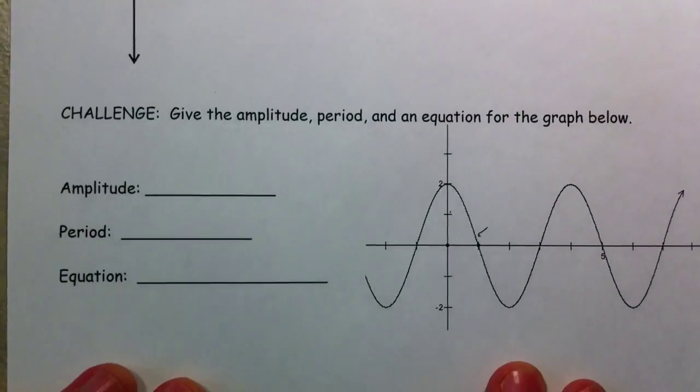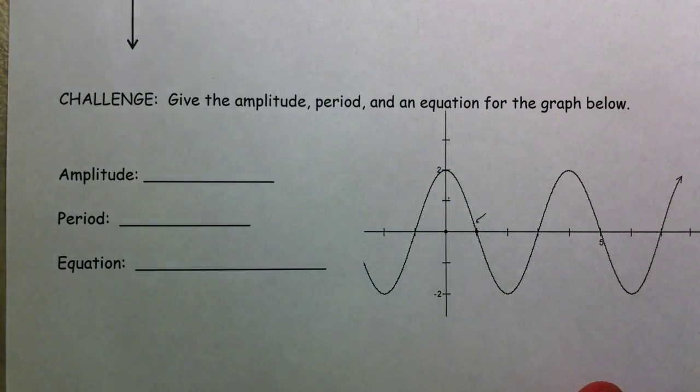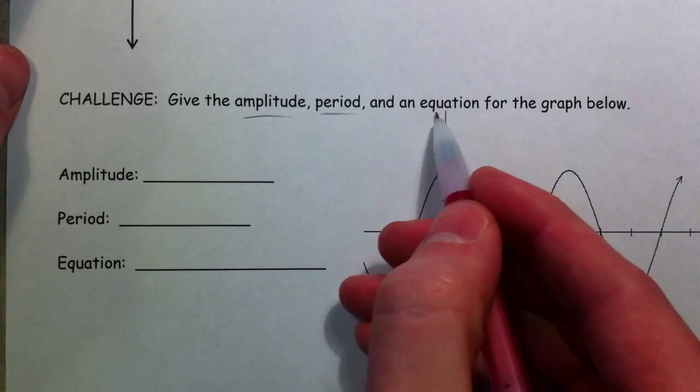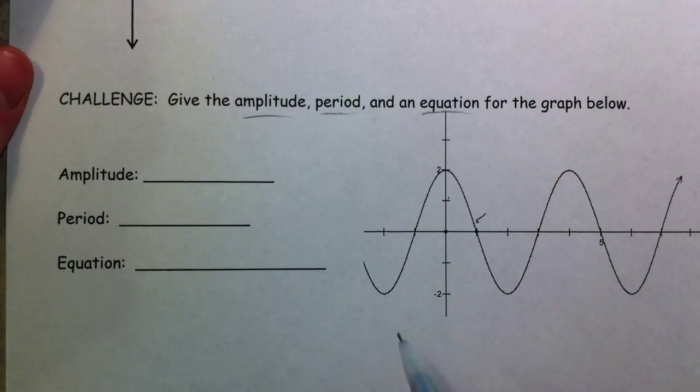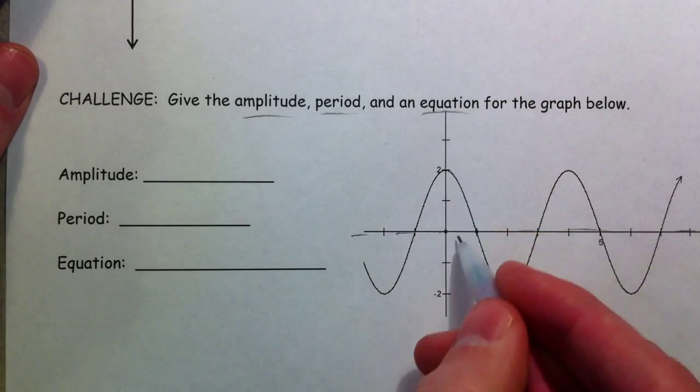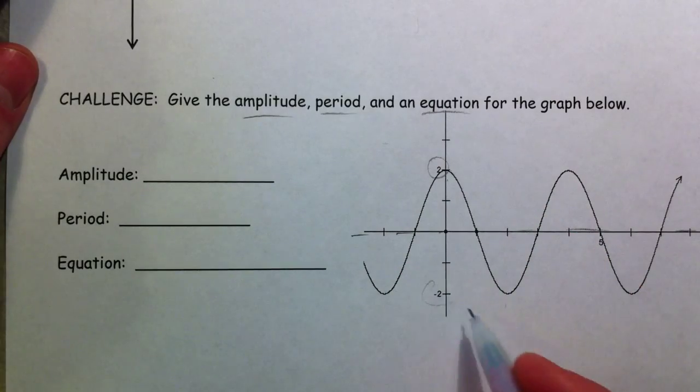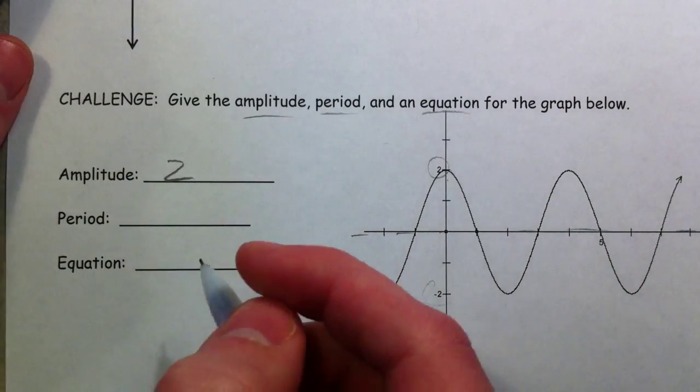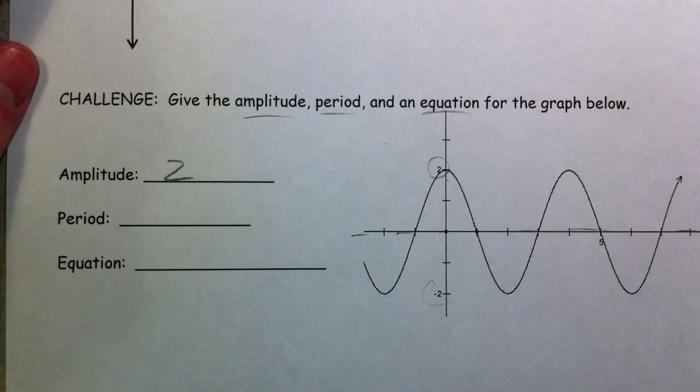And now, for one that's a little backwards. We're going to give the amplitude, period, and equation going backwards and writing this function. So, it's centered around zero. It's gone up to two and down to negative two. And so, the amplitude is two. And so, the number in front of my equation is going to be two.